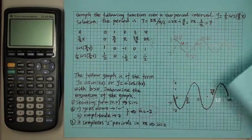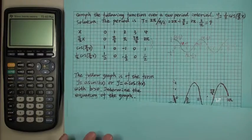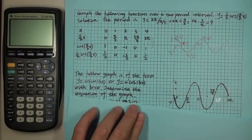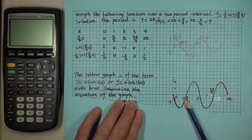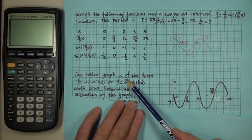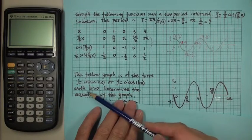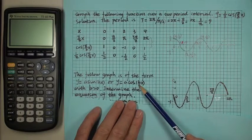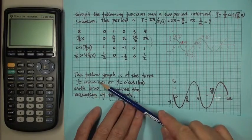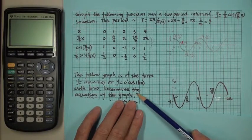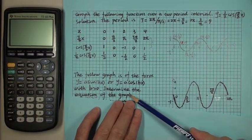Now for the second example: we are given a graph and want to find its equation. The graph is of the form y equals A sine Bx or y equals A cosine Bx, where B is required to be greater than zero. We want to determine the equation of the function.